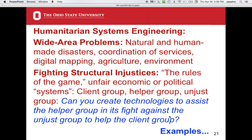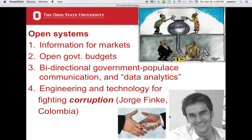One example is open systems. Providing information for markets is very important — many people say that economically disadvantaged peoples lack good information, which is one reason they don't have much money. Making information open generally helps people earning less. Opening government budgets can help reduce corruption and promote transparency. There can also be important software systems for bidirectional government-to-populace communication and data analytics, so governments can understand the people and people can understand the governments.